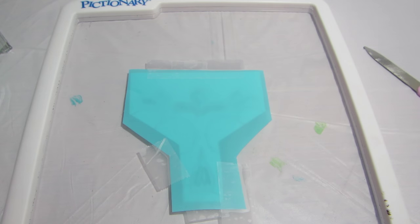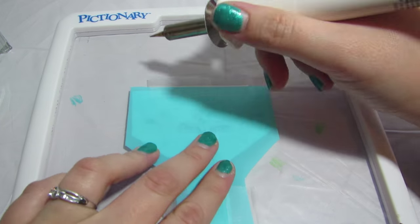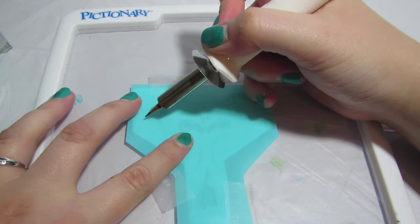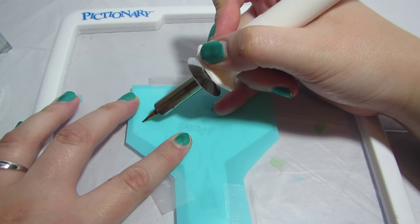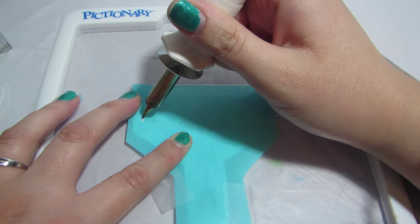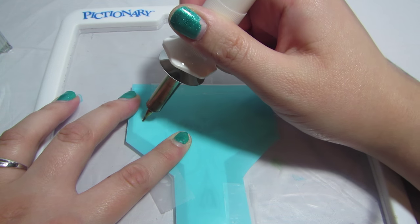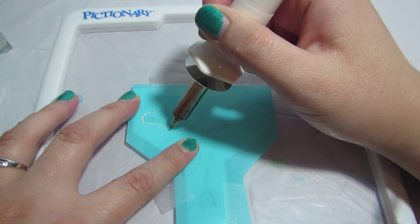I scribbled in the area I want to cut out so that it will be easier to see while I'm cutting. Depending on your image, this step may take a while. Be patient and let the tool do the cutting for you. Just guide it slowly.